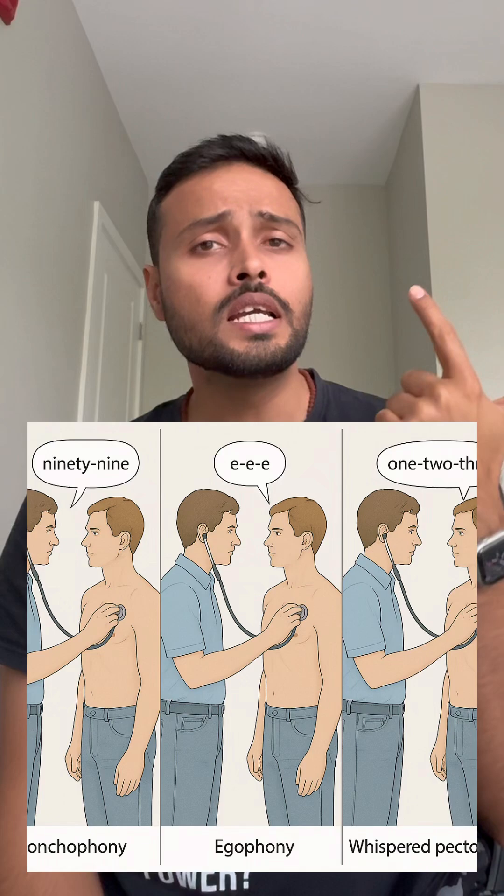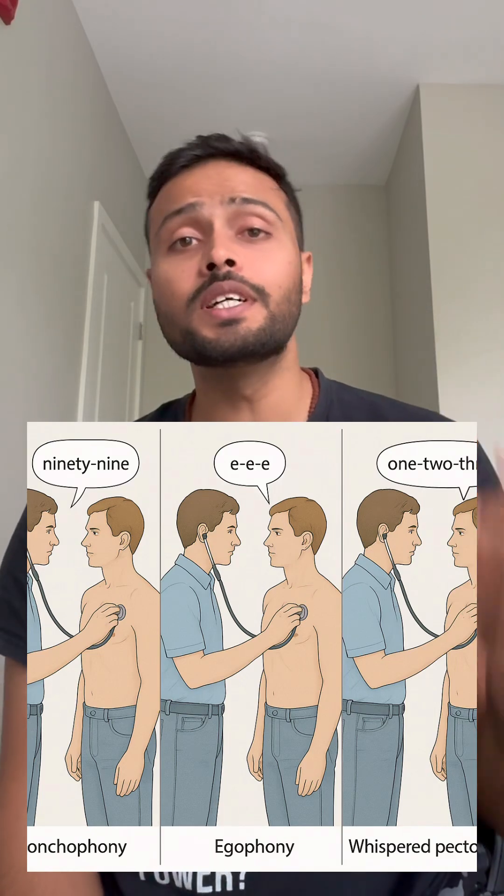Let's simplify three clinical lung auscultation signs: bronchophony, egophony, and whispered pectoriloquy. By the end of this video you will have no confusion about lung auscultation and it will be very easy to remember. Let's go through them one by one.